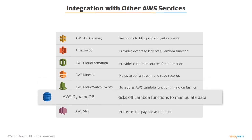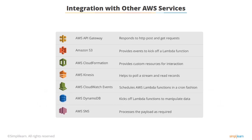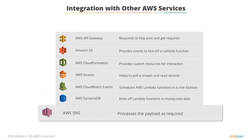AWS DynamoDB: when certain events happen within a DynamoDB table, you can kick off a Lambda function to manipulate that data. AWS SNS: the SNS service can have an AWS Lambda function as an execution point for any message and can process the payload as required.